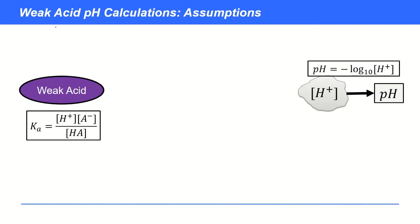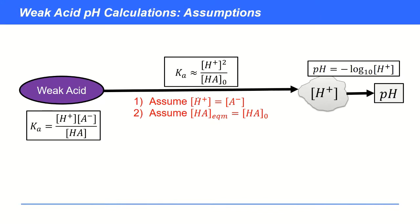So a reminder about weak acid pH calculations. This relationship here between H+ and pH is absolutely fine, and this is just the definition of Ka, so no approximations there. But in order to move forward, we're going to make a couple of assumptions. We make an assumption here and a second assumption there, and that allows us to arrive at an approximate Ka formula which is much easier to rearrange and solve for the H+ concentration. But are these assumptions valid? We're going to look at each in turn and see when they're likely to break down.